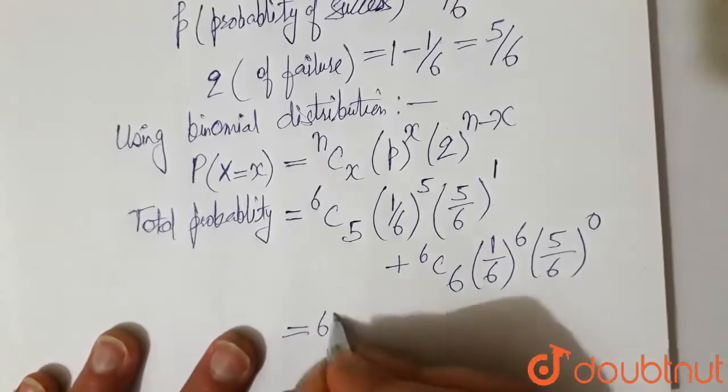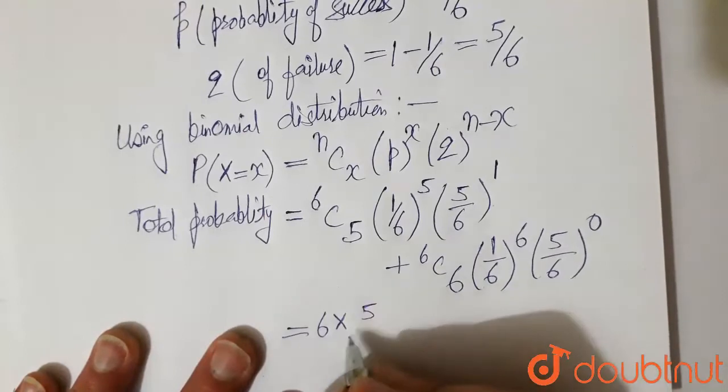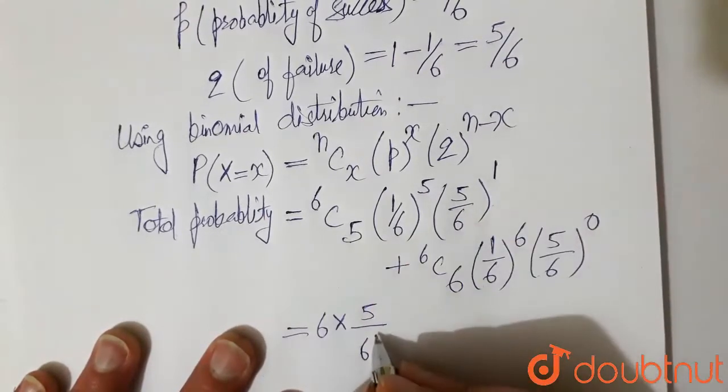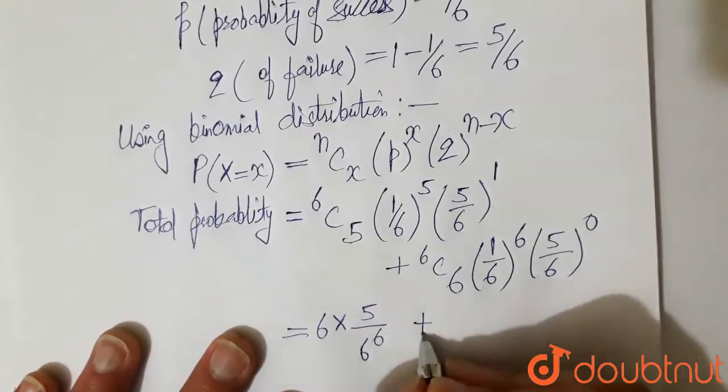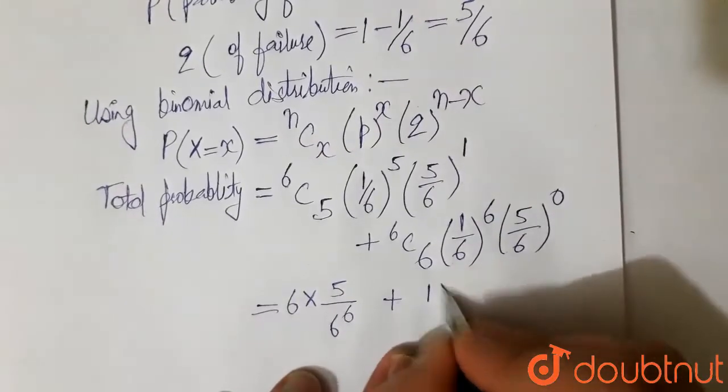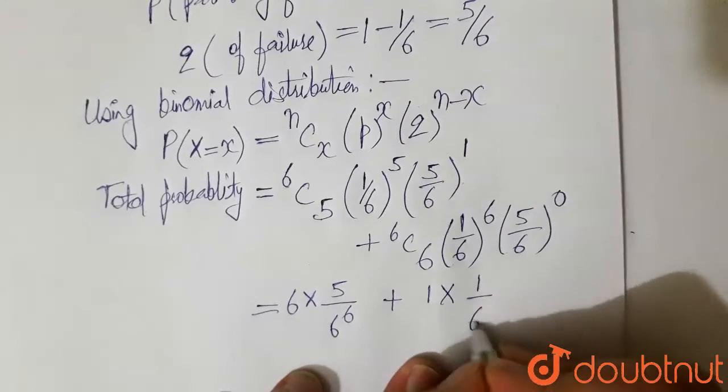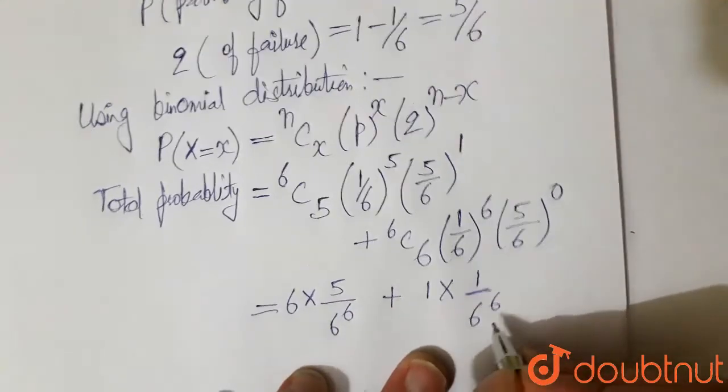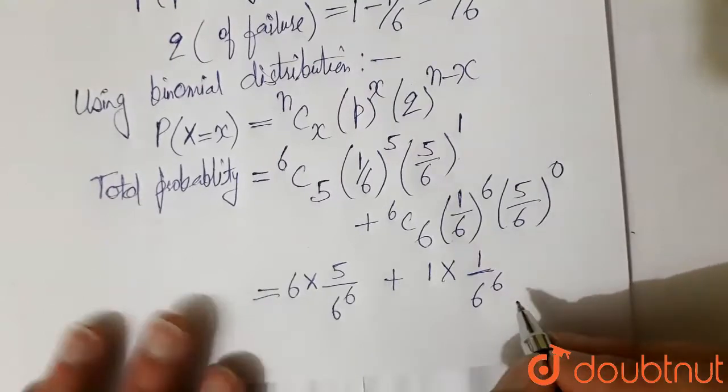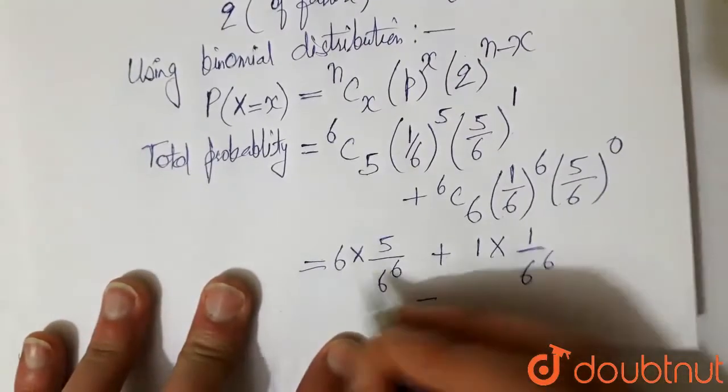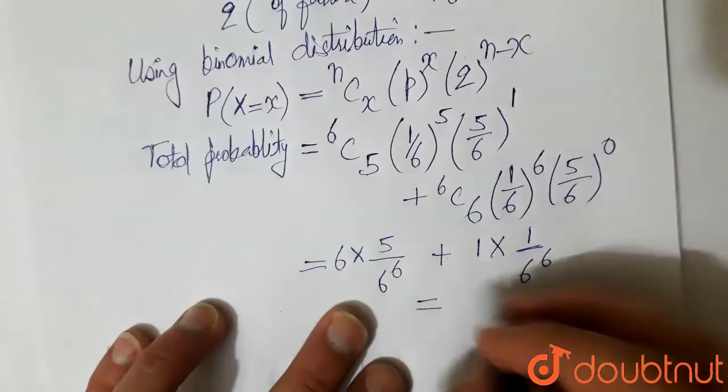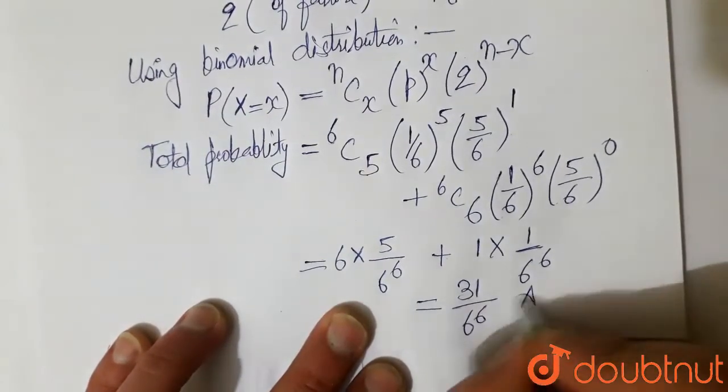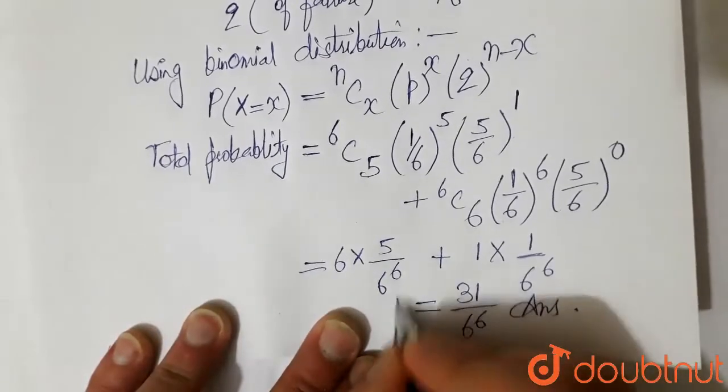So this becomes 6 into 5 divided by 6 to the power 6, plus 1, that is 6 plus 1, divided by 6 to the power 6. So this becomes 7 divided by 6 to the power 6. So this is our final probability.